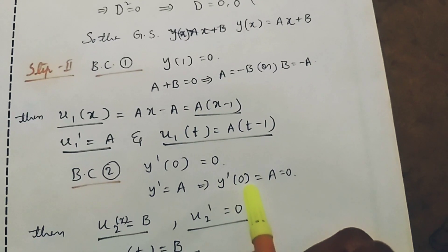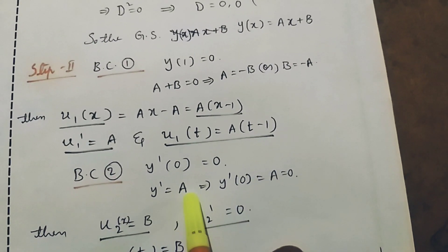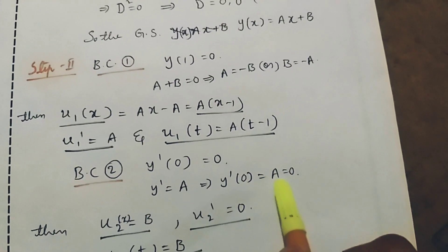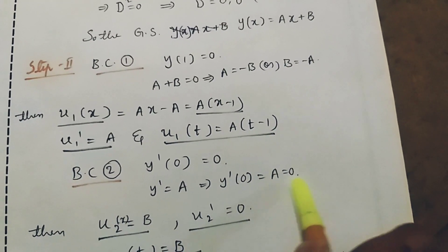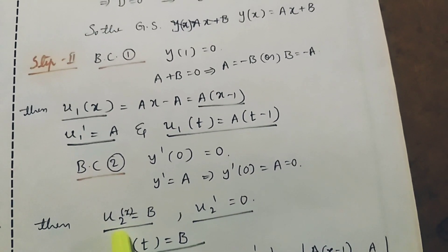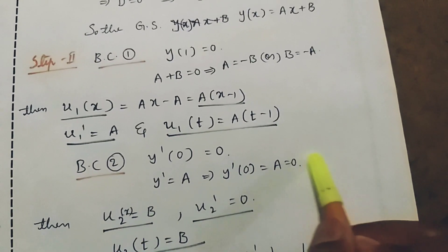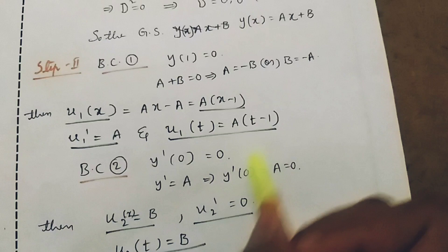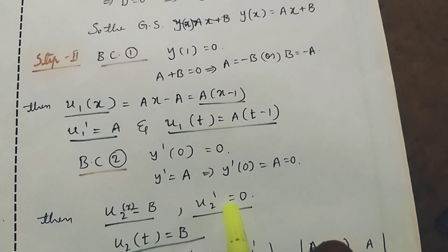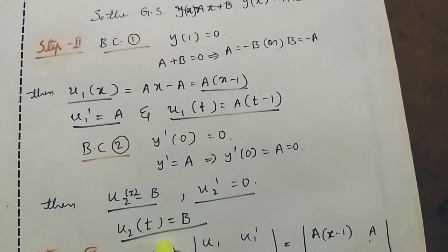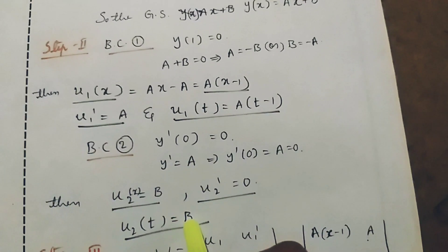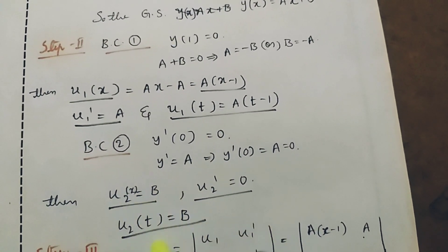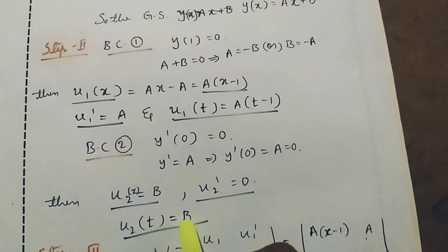Since there is no x term in the derivative, y dash of zero is nothing but a equal to zero. Then substituting a equal to zero gives u₂ of x equal to b, and u₂ dash equal to zero. Since there is no x term, u₂ of t is also b.